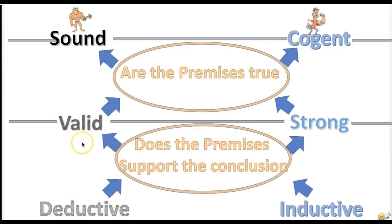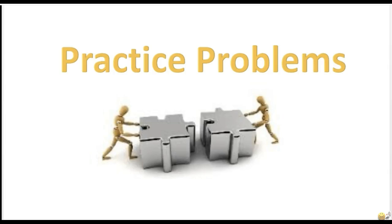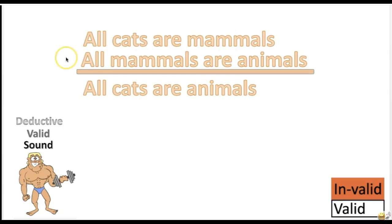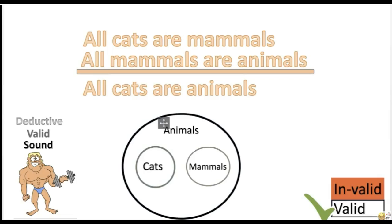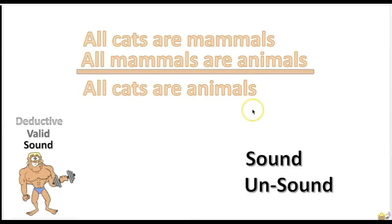Just check for validity, then check to see if the premises are true. Practice problem: 'All cats are mammals. All mammals are animals. Therefore, all cats are animals.' Is this argument valid or invalid? The answer is valid. Is this argument sound or unsound? The answer is sound — the argument is valid and both premises are true.